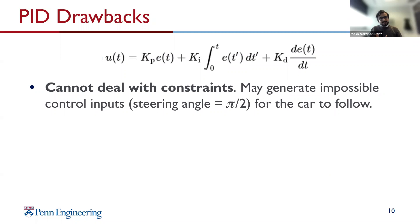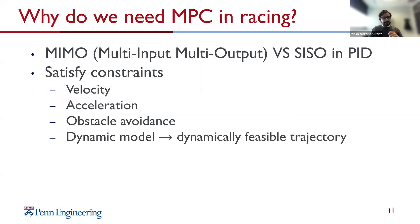MPC can also explicitly deal with constraints on the system — avoiding static obstacles, staying within boundaries. PID struggles with this and could generate impossible control inputs. For example, for a large enough error signal, the PID equation could generate a steering angle of 90 degrees or more, which is physically impossible. Model predictive control, on the other hand, has a model with constraints and knows not to do these things. MPC allows you to deal with MIMO systems naturally, satisfy constraints such as velocity limits, physical acceleration bounds, and obstacles, and generate trajectories your car can follow.